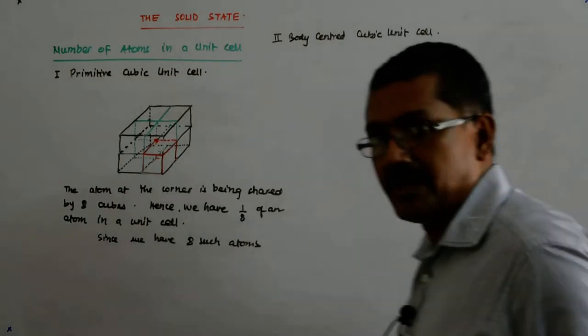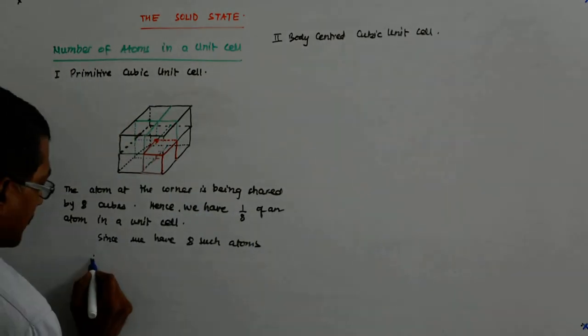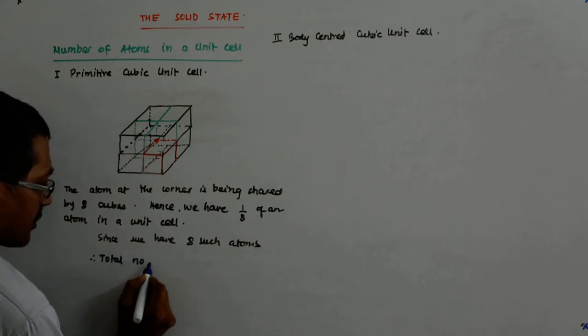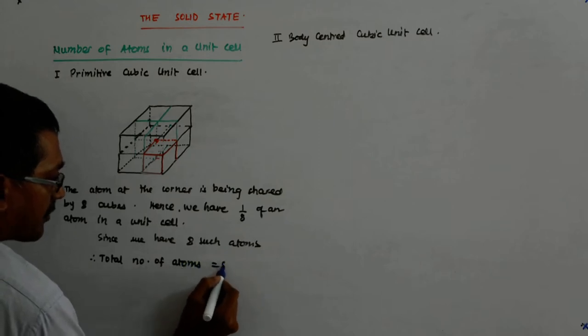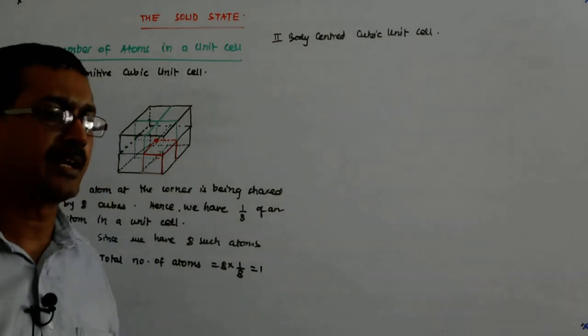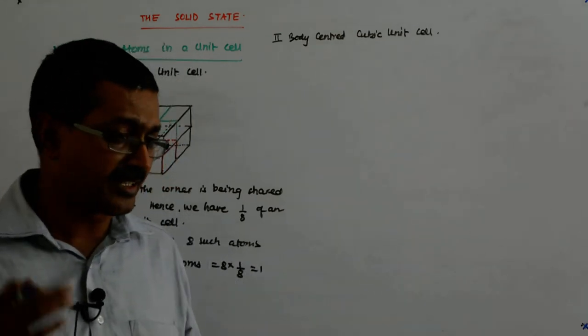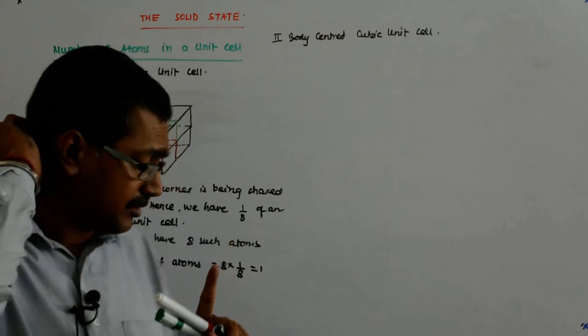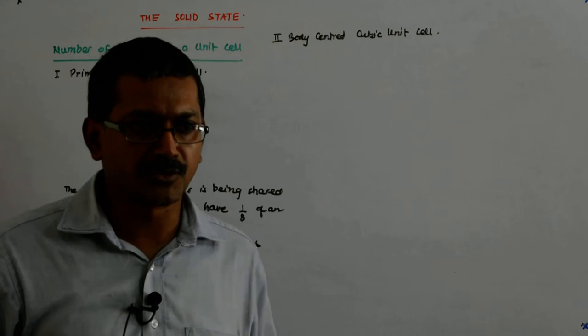Now, since we have 8 such atoms, therefore total number of atoms is equal to 8 into 1 upon 8 is equal to 1. So, though there are 8 corners, all of them being occupied by an atom, the unit cell is in the position of only 1 atom. This will help us in calculation of the densities when we come to it, right?